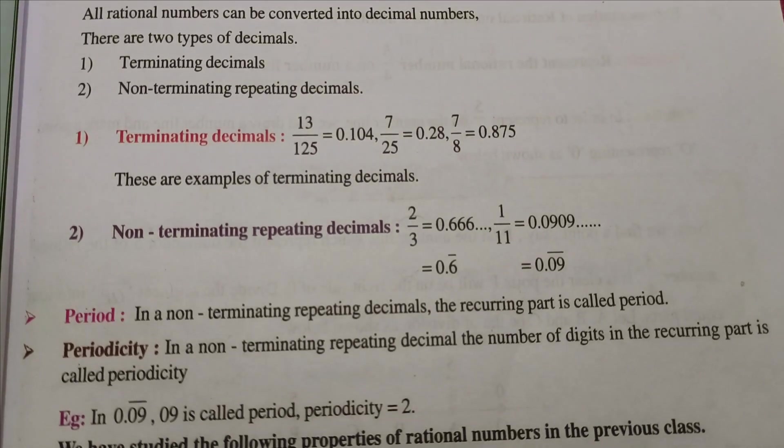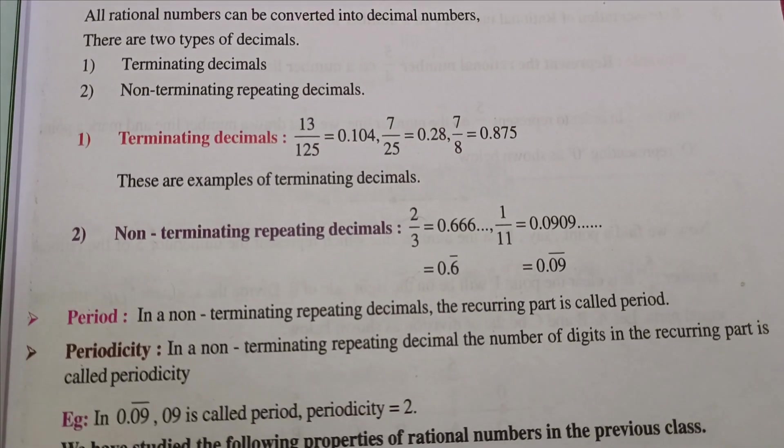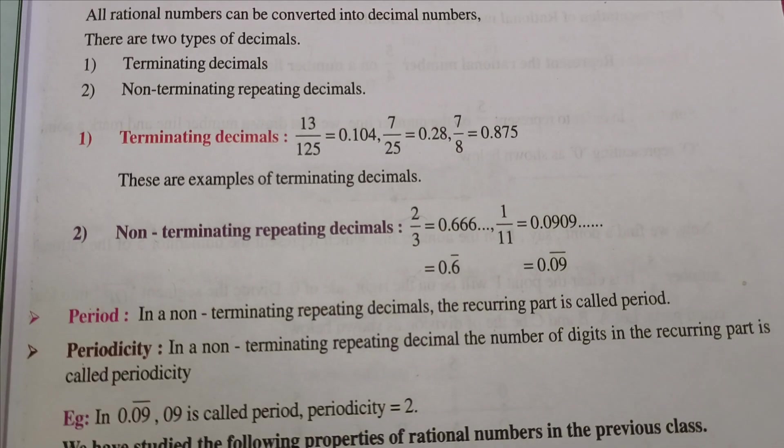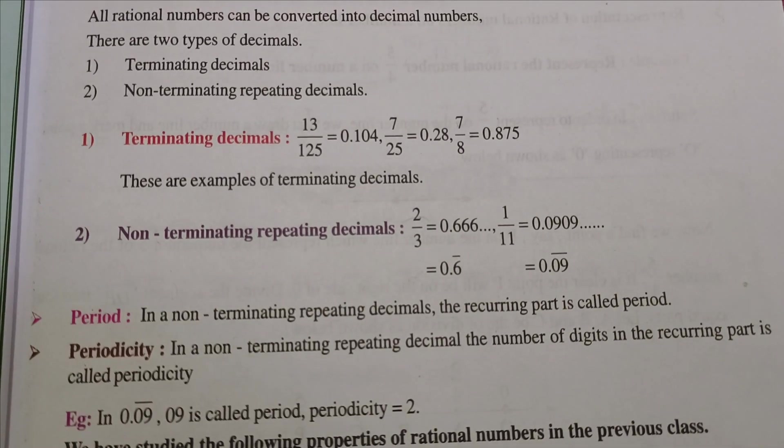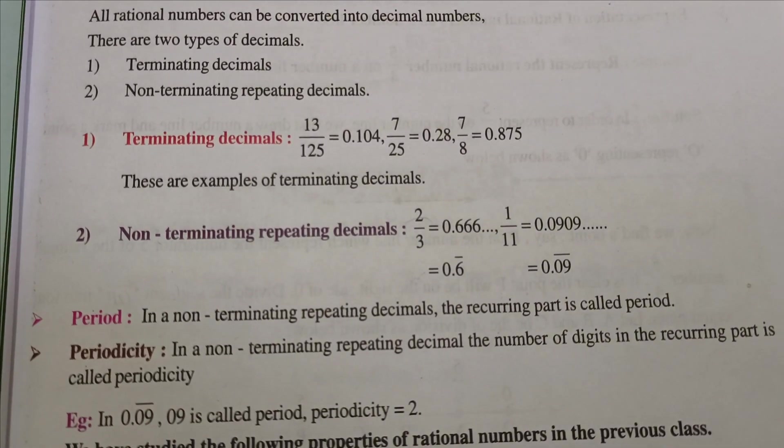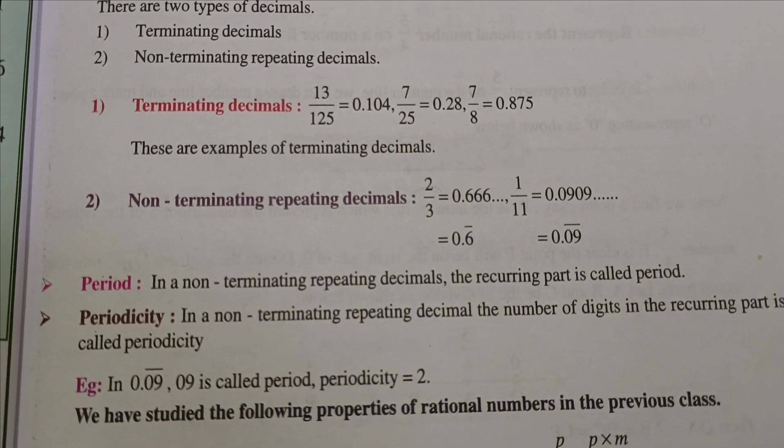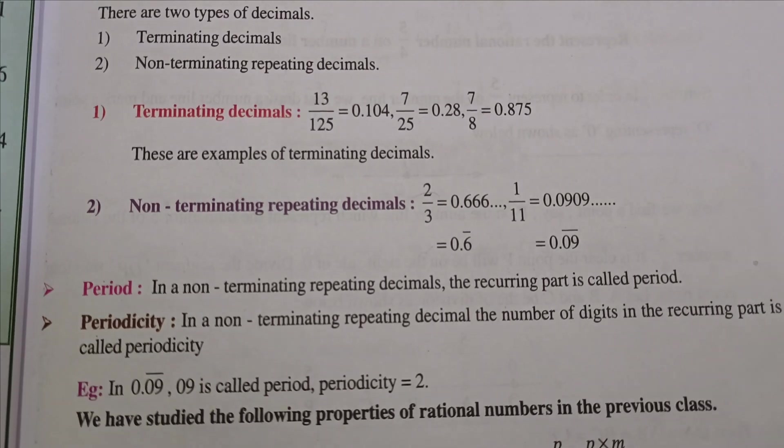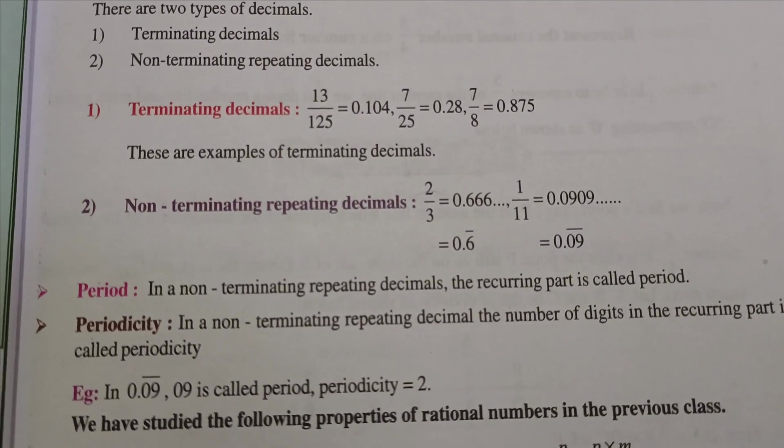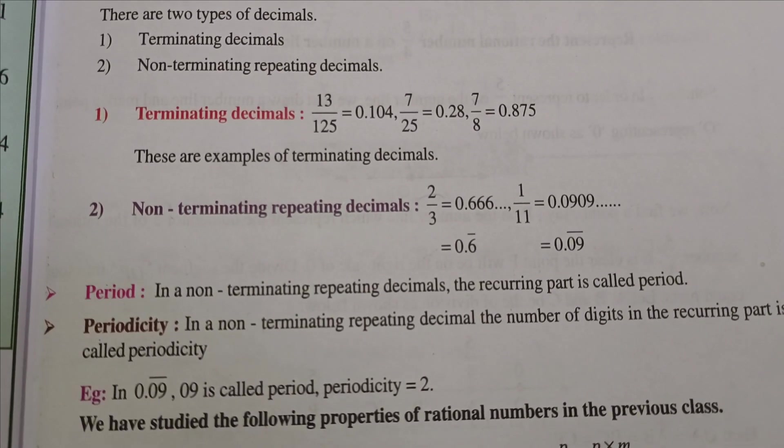Example: in 0.09 bar, the 0.09 is called period, and periodicity equals 2. Periodicity is the number of digits of the recurring part after the decimal point.